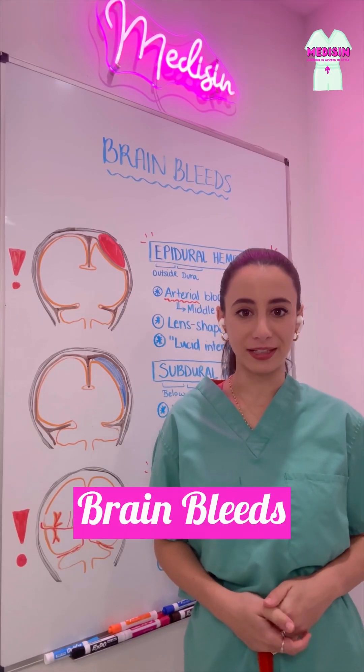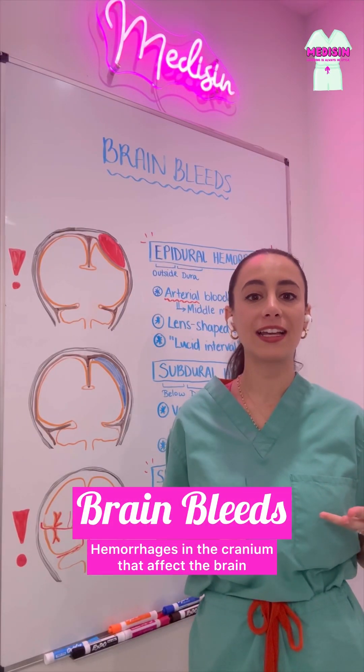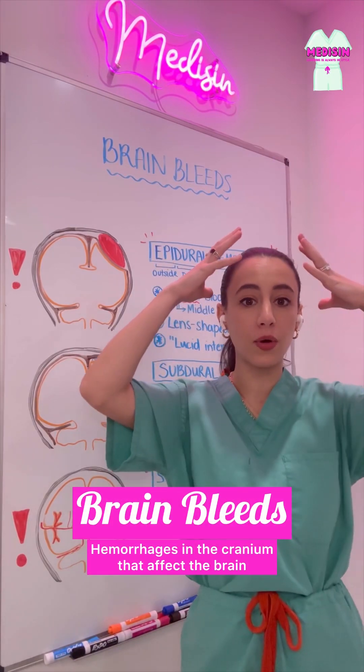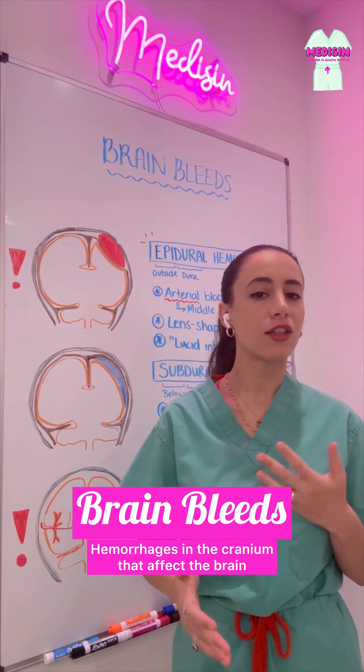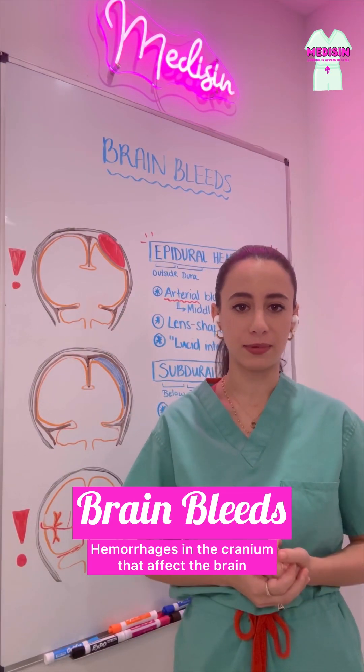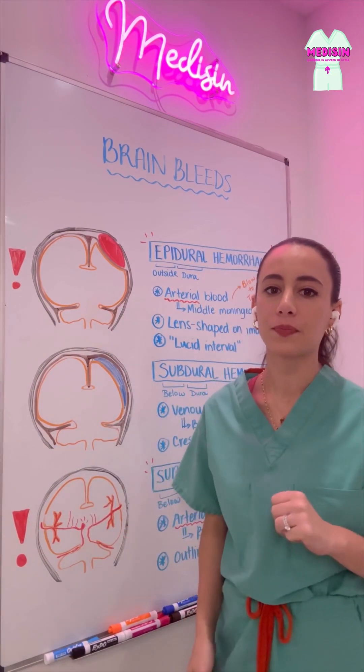Today we will be discussing brain bleeds. These are hemorrhages or bleeding that occur within the cranium that affect the brain in some way. There are lots of different types of brain bleeds, but we're going to discuss three of them.